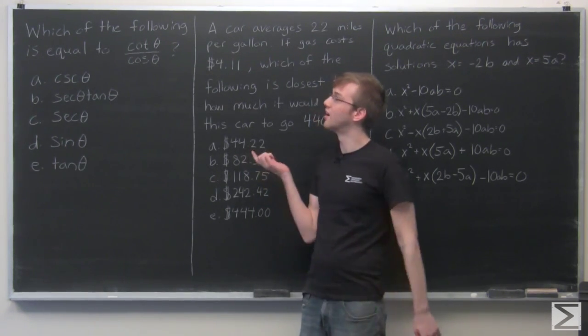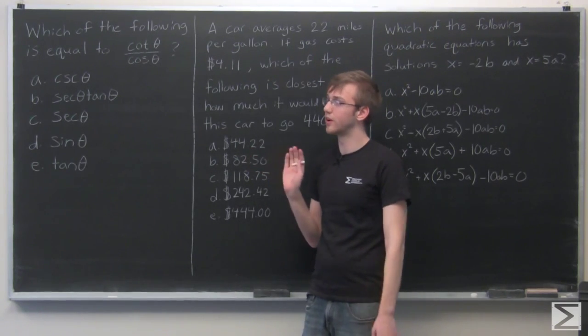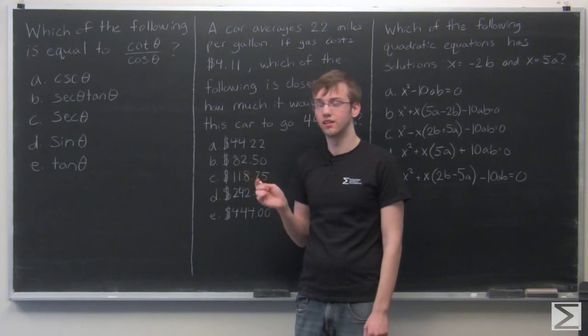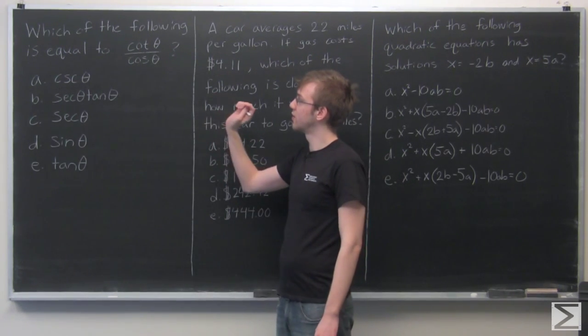So our first question here, this has to do with trigonometry, basic trigonometry. Which of the following is equal to cotangent theta over cosine theta? All right, so how are we going to solve this?